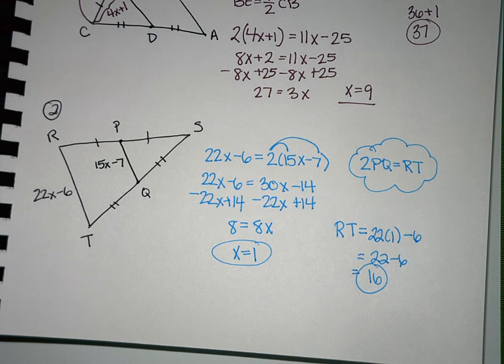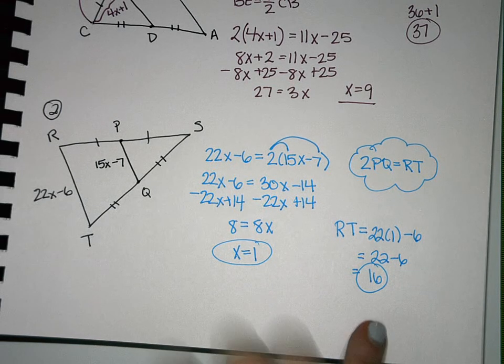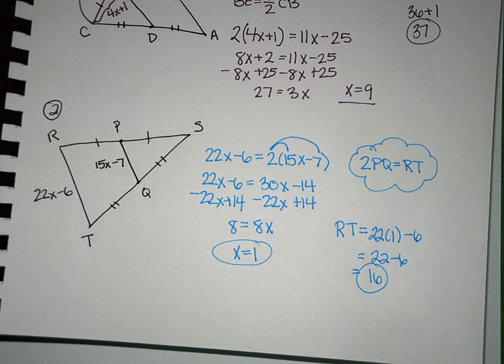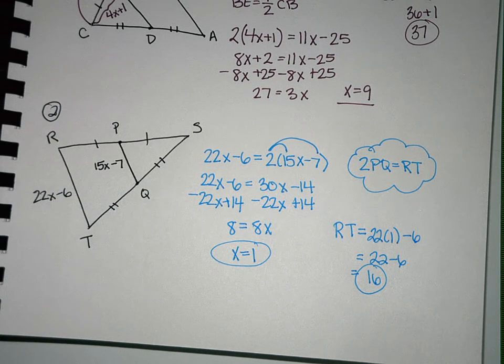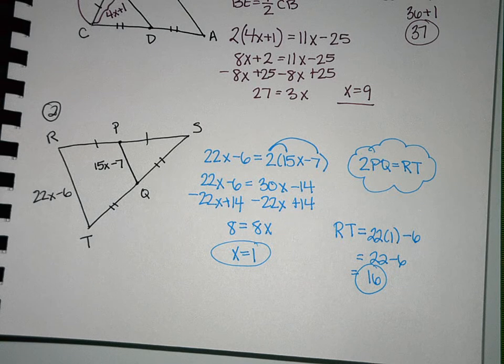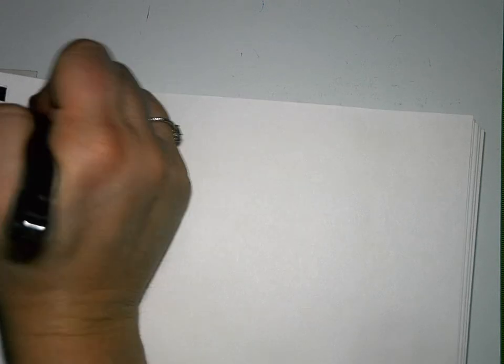So make sure when you guys are reading these that you read the directions to know whether you can stop at X or if you have to go and plug in to find the missing side length. Any questions so far on those first two, just using midpoint or using the midsegment theorem to help you find an X or a missing side? There's one more I want to do with you guys, and it's another one that's find X and Y.